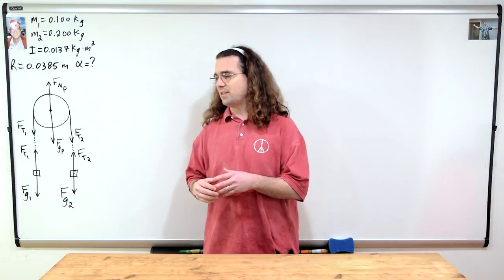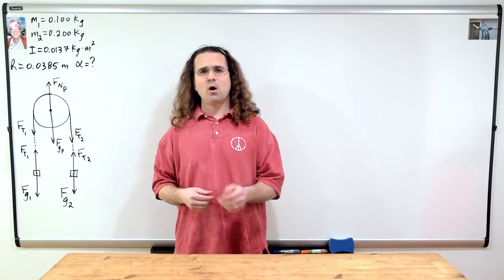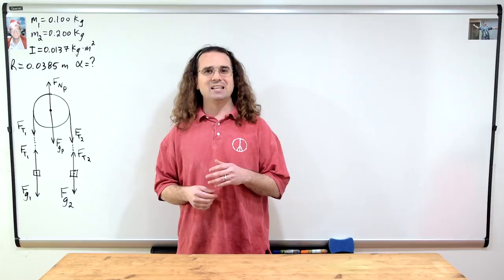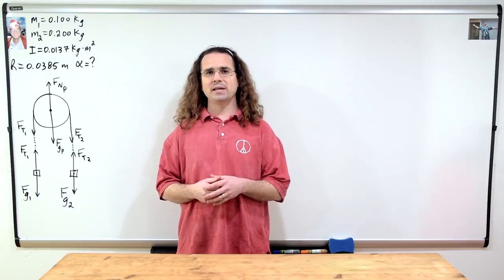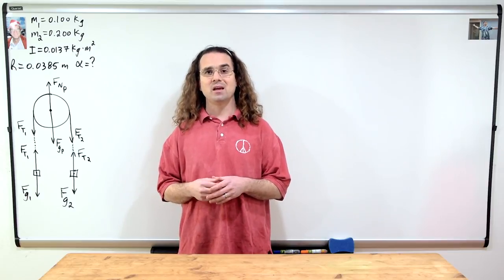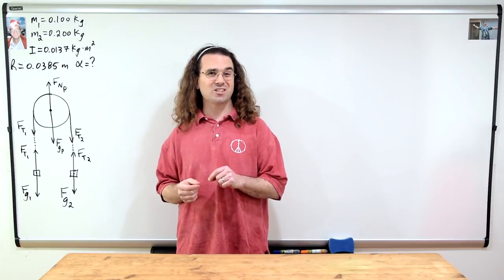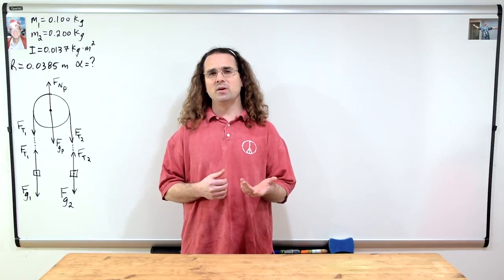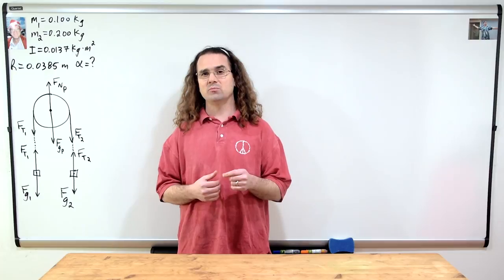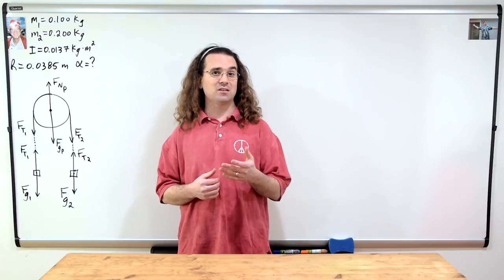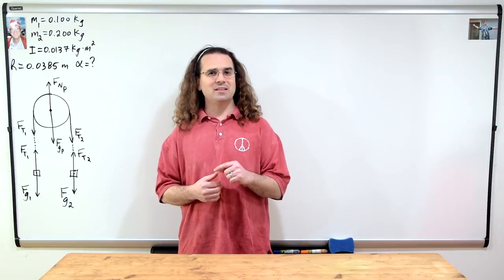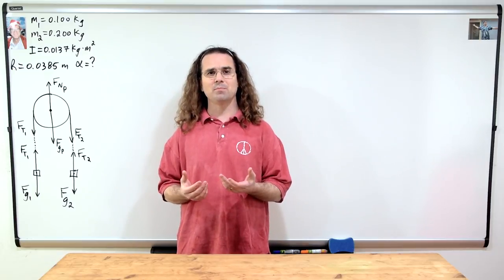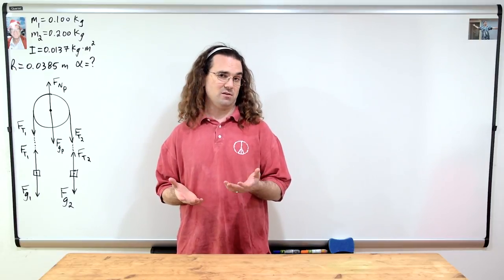Shouldn't the two forces of tension on either side of the pulley be the same? It is just a single string, so the force of tension in any part of the string should be the same, right? Because the pulley has mass and therefore rotational inertia, it takes a net torque to angularly accelerate the pulley, and therefore these two tension forces on either side cannot be the same.